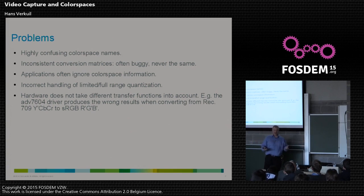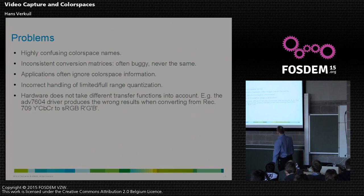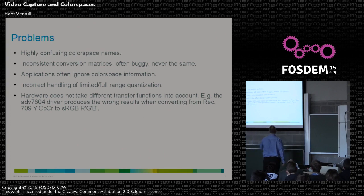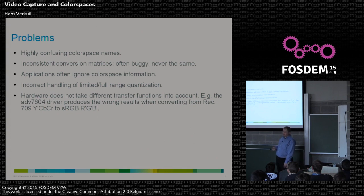What are the problems with all this? Highly confusing names. Inconsistent — going through the literature, everybody has slightly different matrices. Most applications ignore color spaces completely. Full and limited range quantization usually ignored or done incorrectly. Transfer functions seem to be a really bad area for hardware — they just ignore them. For example, the ADV7604 HDMI receiver, when converting HD TV to RGB for display, ignores the entire transfer function. You end up with an sRGB picture that uses the Rec. 709 transfer function instead of the sRGB one. That is actually wrong.